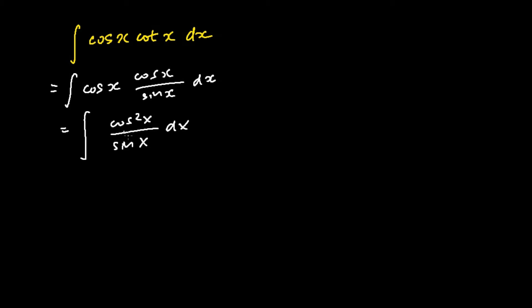And the integration of cos squared x over sin x dx is just basically equal to ln absolute value of cosecant x minus cot x plus cos x plus C.